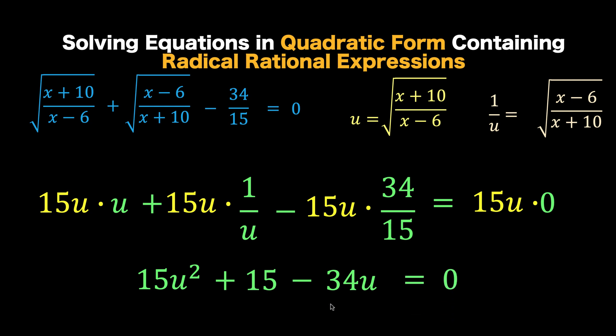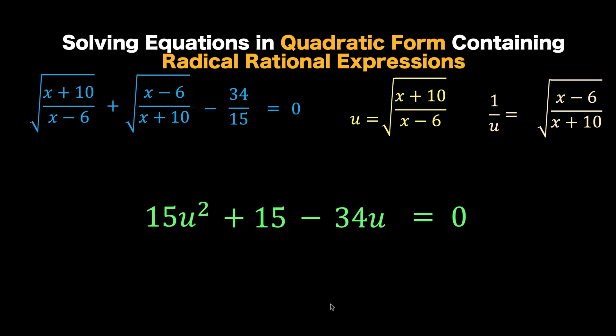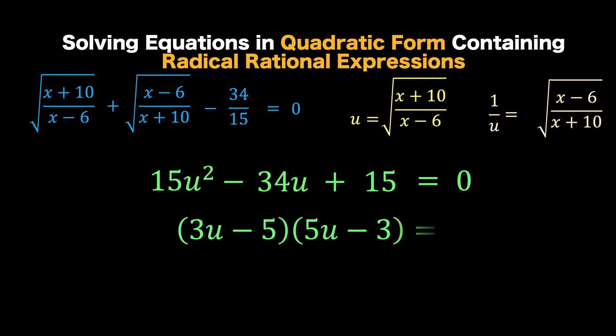Let's concentrate now on this last equation. Let's write this in standard quadratic form. And lucky enough, we can factor this quadratic equation this way. And equating each of these factors to 0, we arrive at u equals 5 over 3, or u equals 3 over 5. Notice now that this u and this u are both equal to these radical rational expressions. So let's continue our solution.